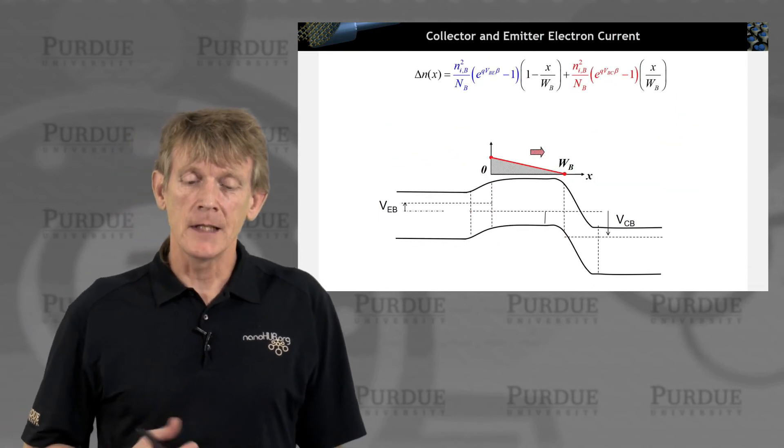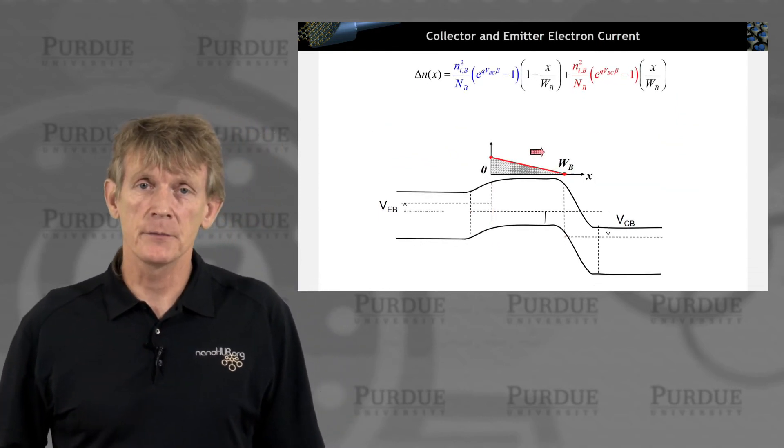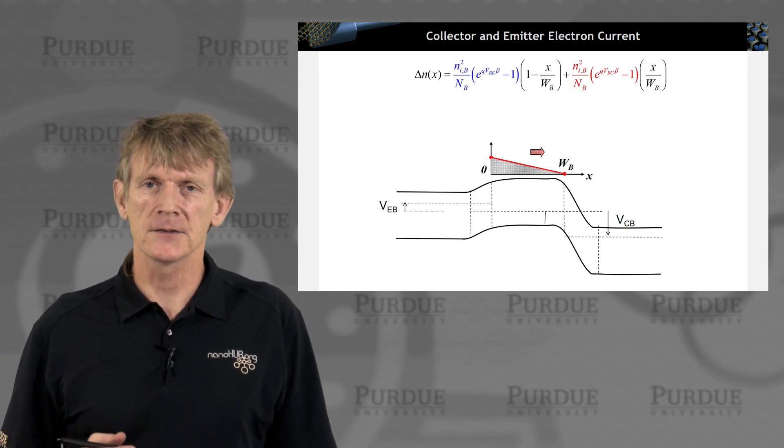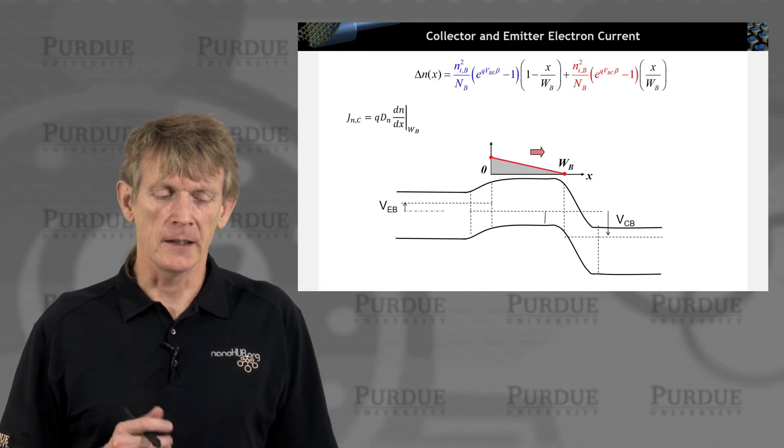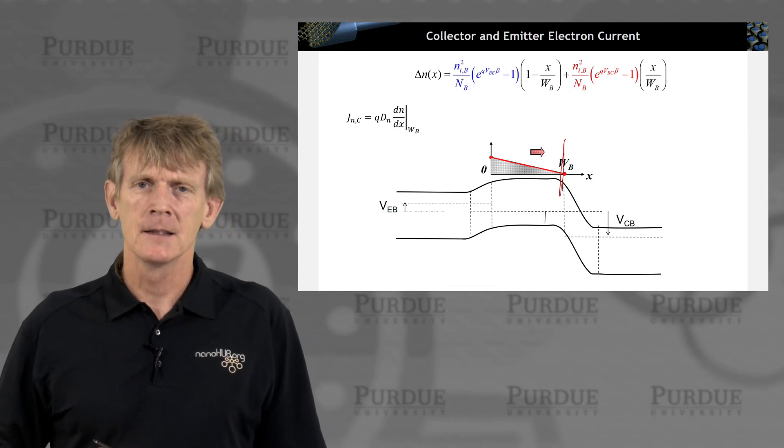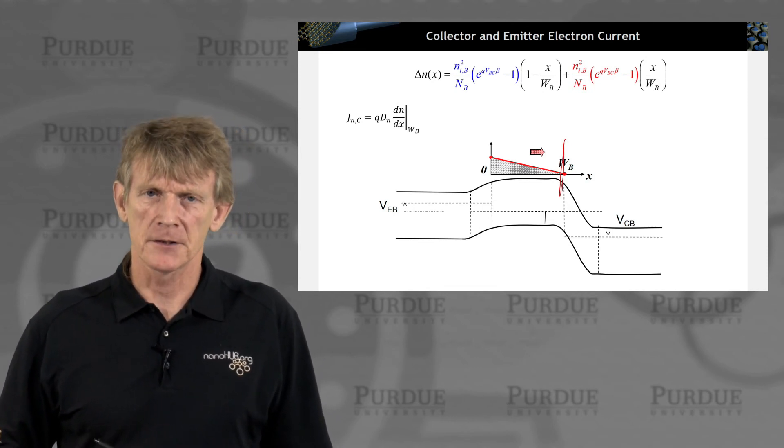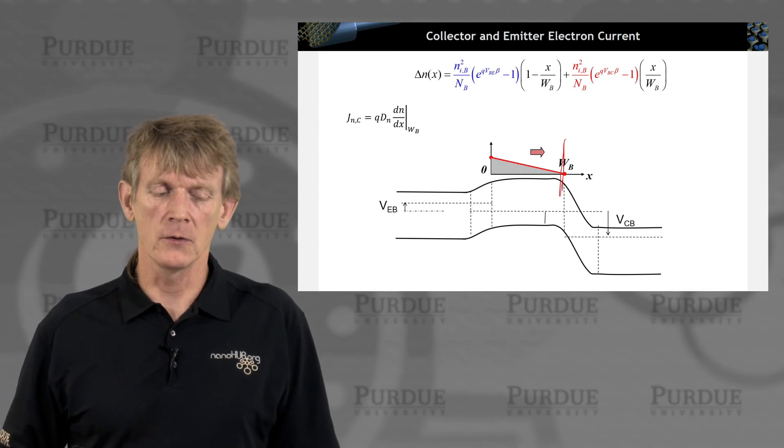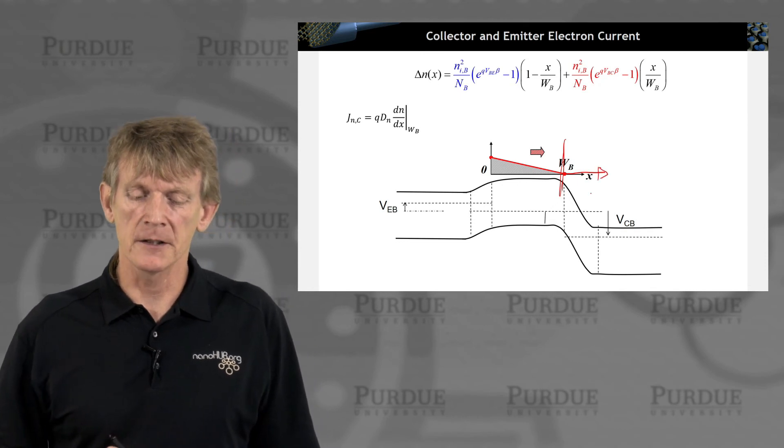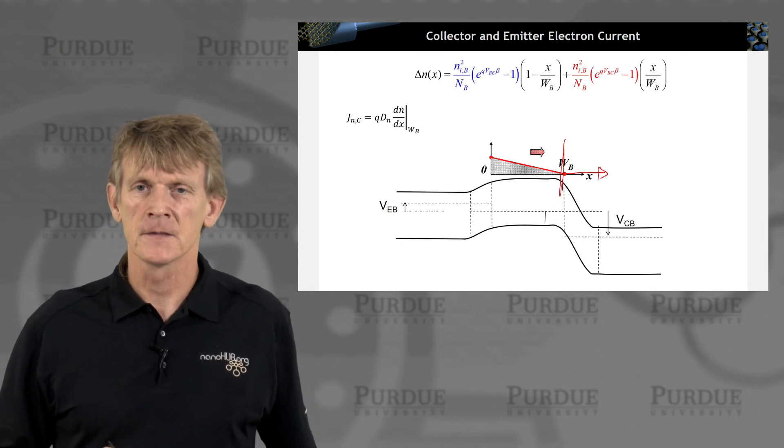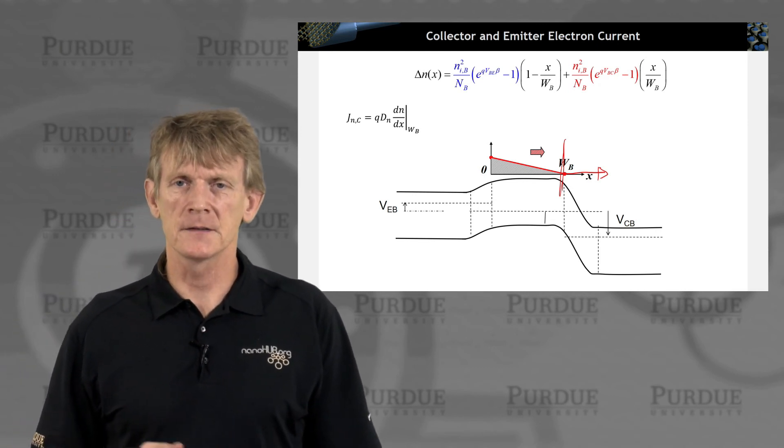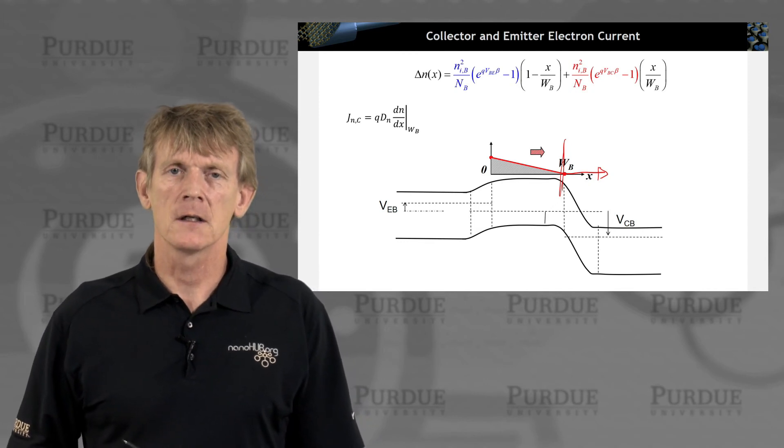If we have a carrier distribution in the base, and we're wanting to calculate the current in the base, we can do that. We can calculate here at the base junction side the current flow in the collector. We assume that the number of carriers that make it through the junction is constant. So we calculate the current at this point to get the collector current.